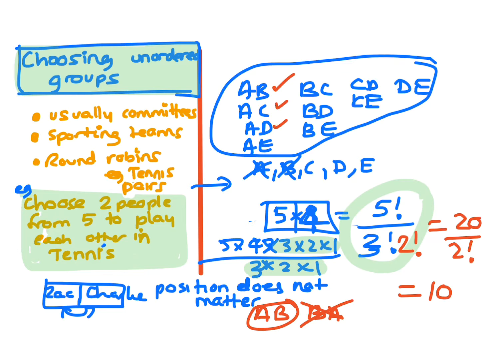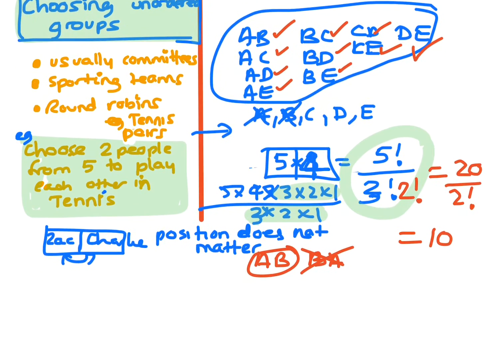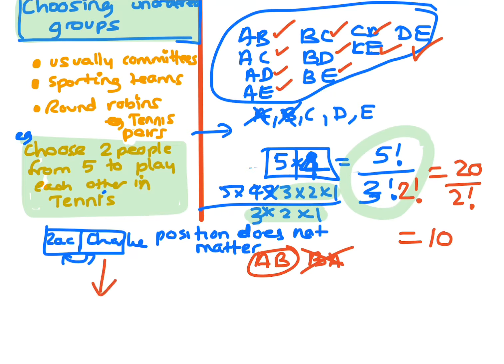Now let's just count these: 1, 2, 3, 4, 5, 6, 7, 8, 9, 10. Exactly 10, which is half the number as if you did them in the opposite order. Now a quicker way of doing this, when you're just choosing 2 people from 5 people and the order does not matter.